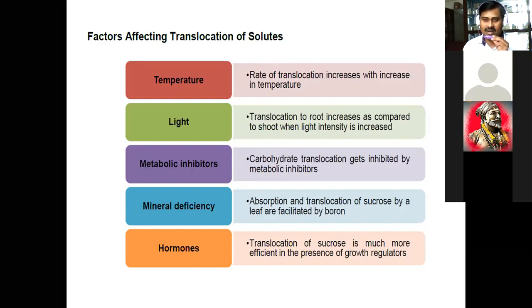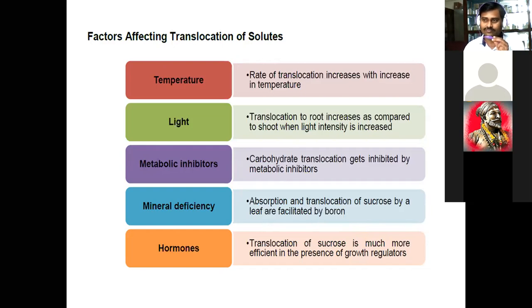Metabolic inhibitors: carbohydrate translocation gets immediately inhibited by metabolic inhibitors. Several factors act as inhibitors, such as abscisic acid, which stops the flow of food material. Whenever there is no synthesis of auxin or cytokinin, abscisic acid increases, and due to that food does not move to the leaves or other parts of the plant, causing decay or drying. So metabolic inhibitor is also a factor responsible for inhibition of translocation.